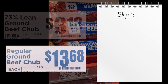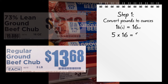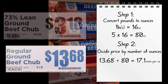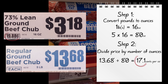The first step is to convert pounds to ounces. There are 16 ounces in a pound, so this package has 80 ounces in it. Next, we divide the price by the number of ounces. $13.68 divided by 80 equals 17.1 cents per ounce. When we compare the unit prices, we see that the five-pound package is the better buy.